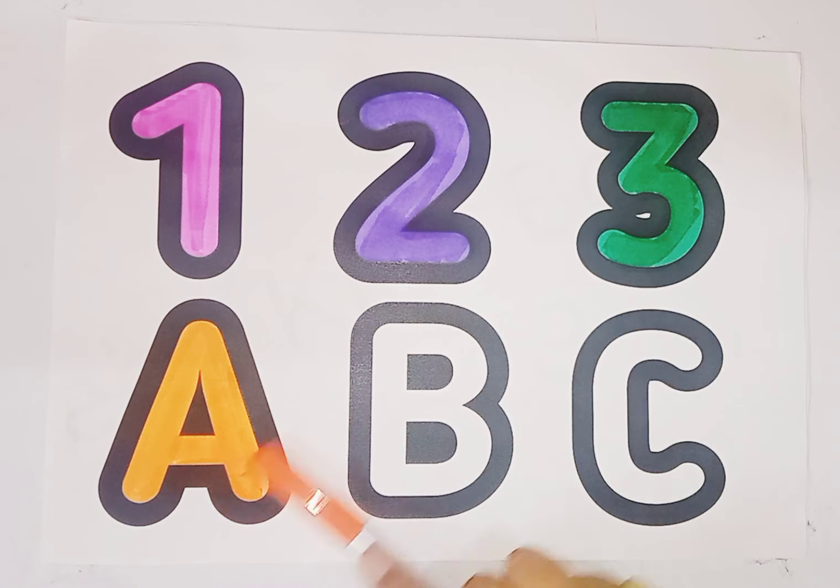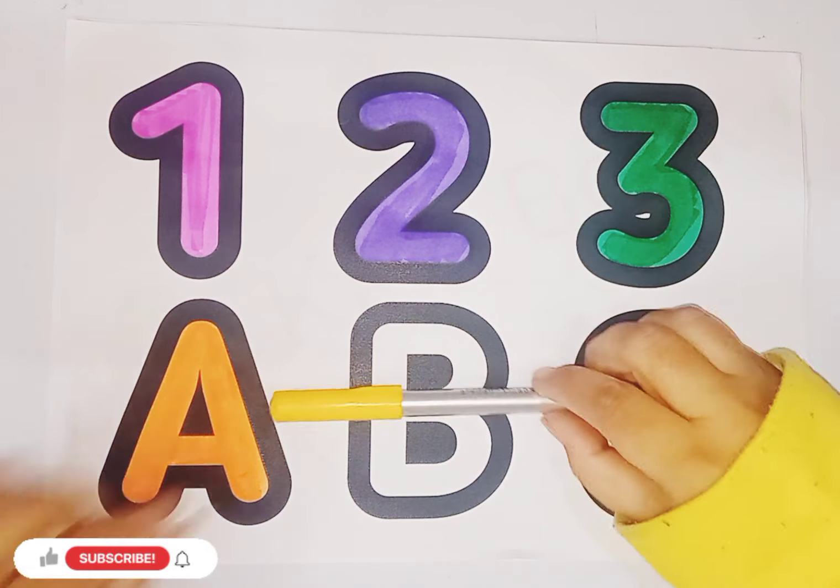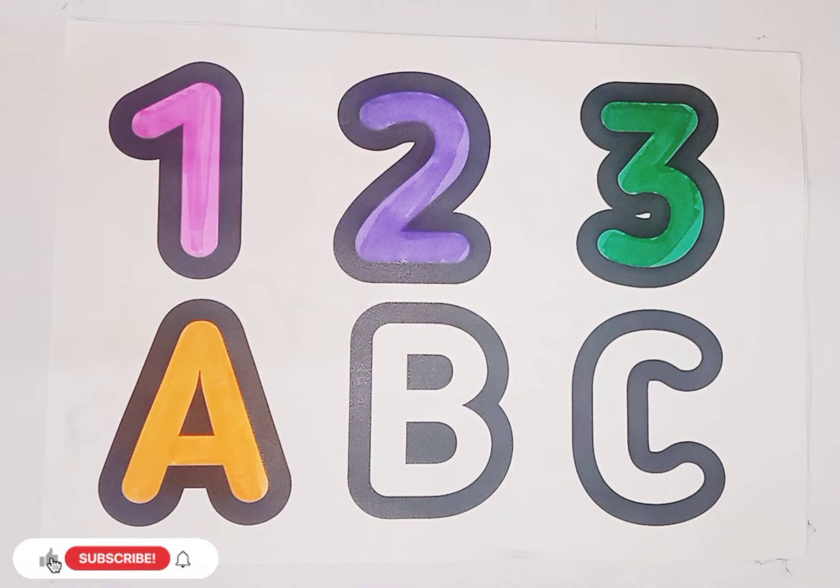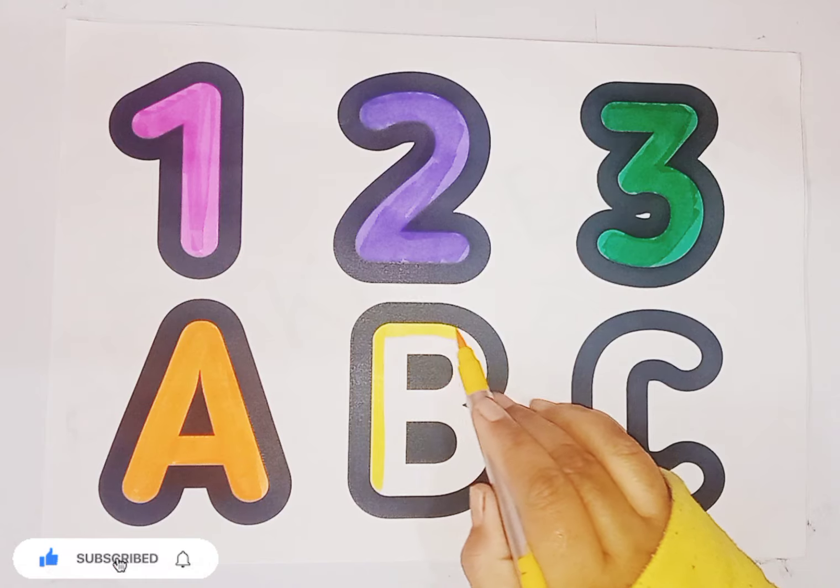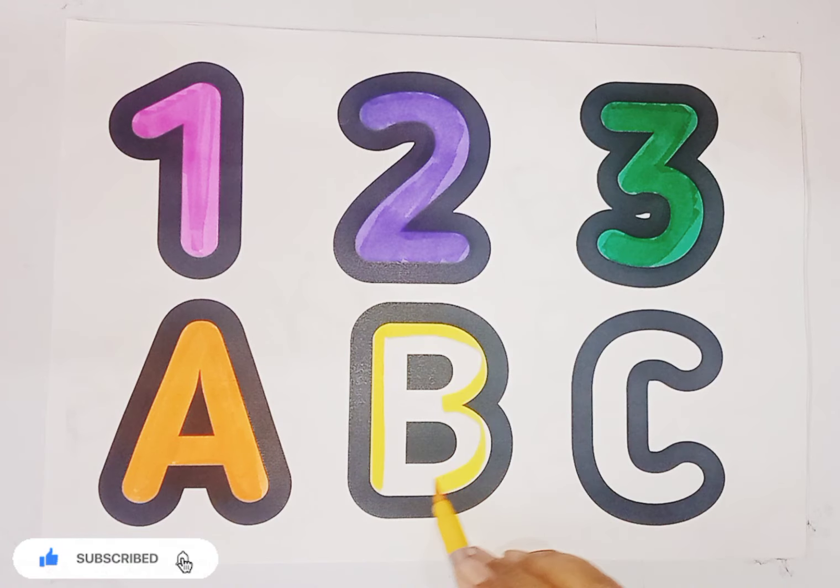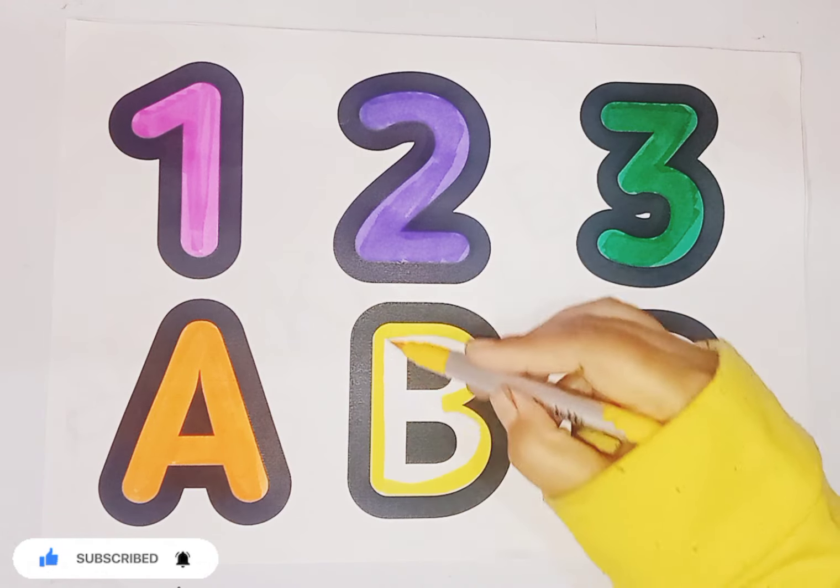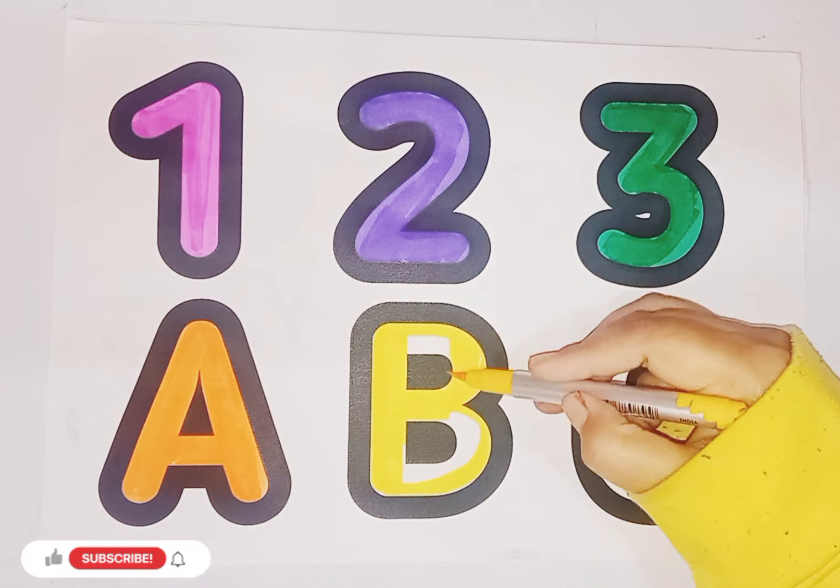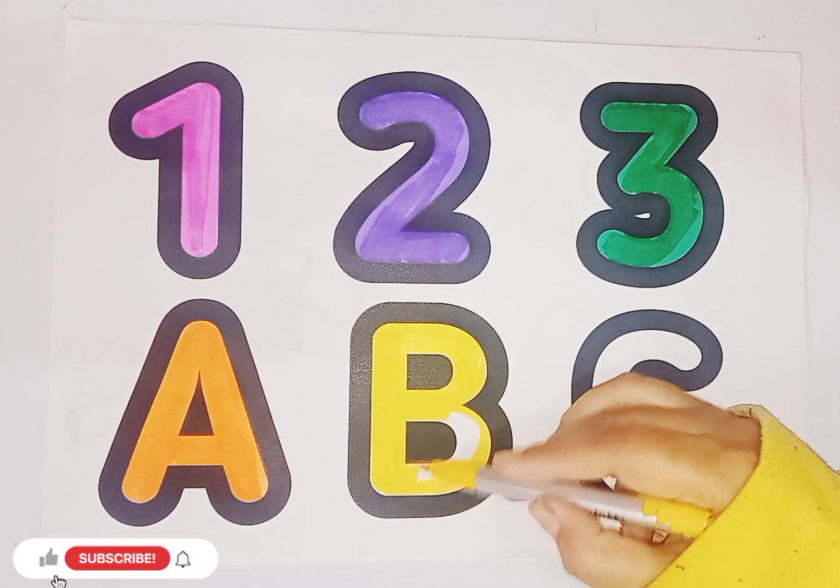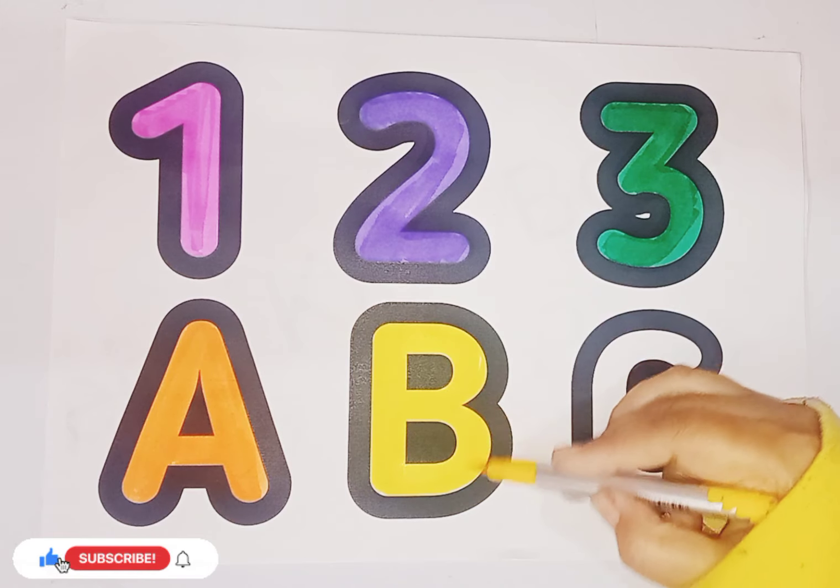Now this is yellow color. Alphabet B. B is for bowl. Letter B.